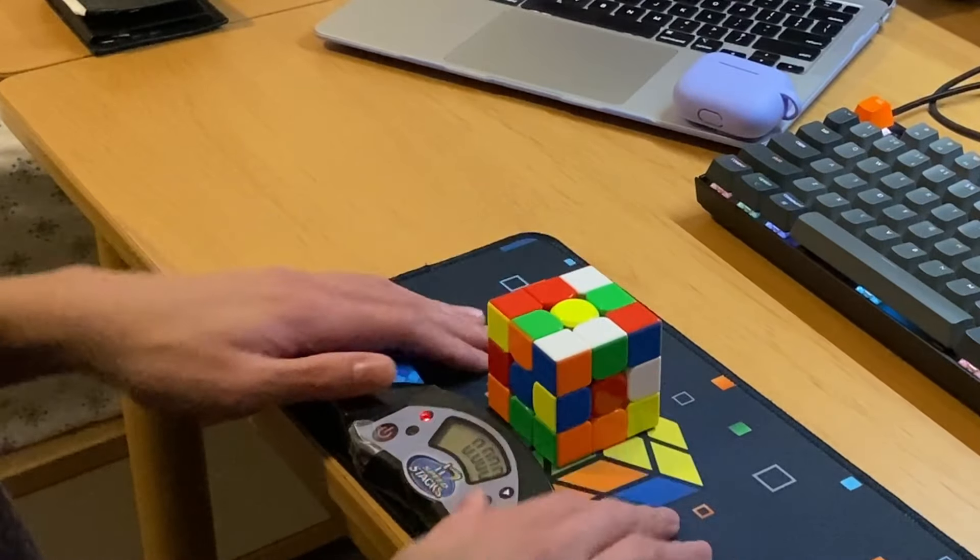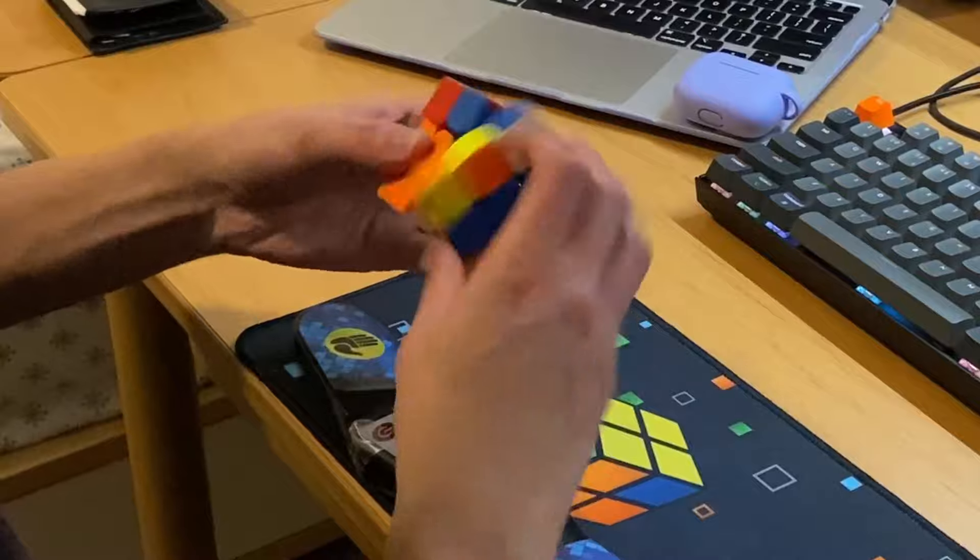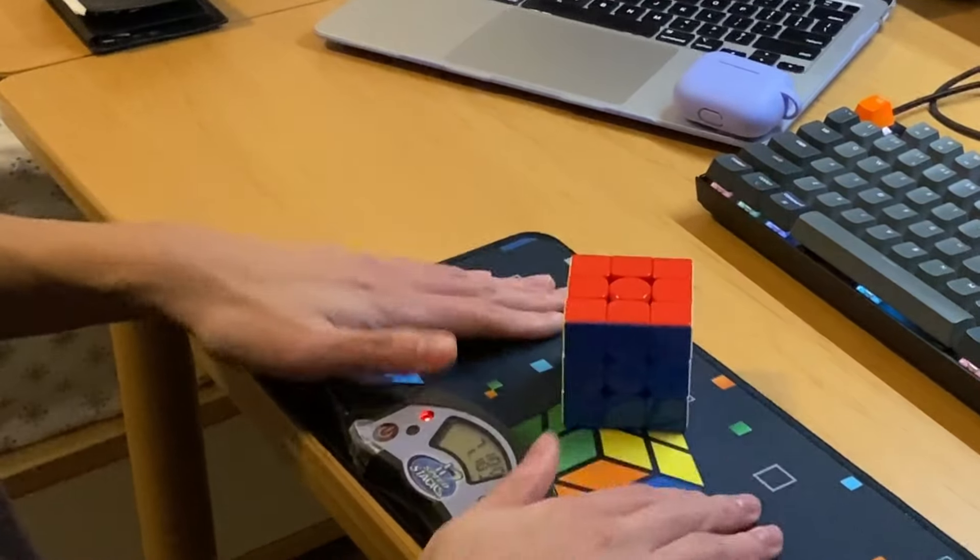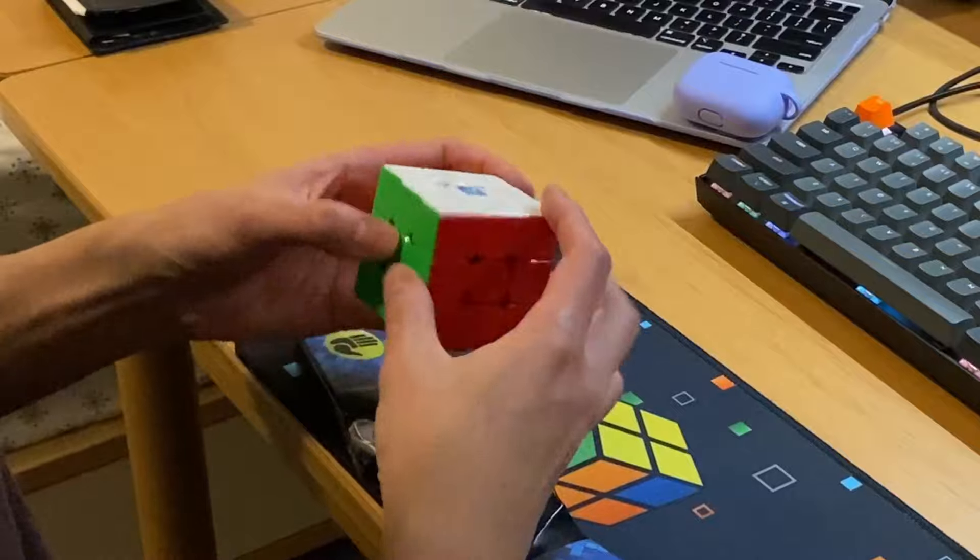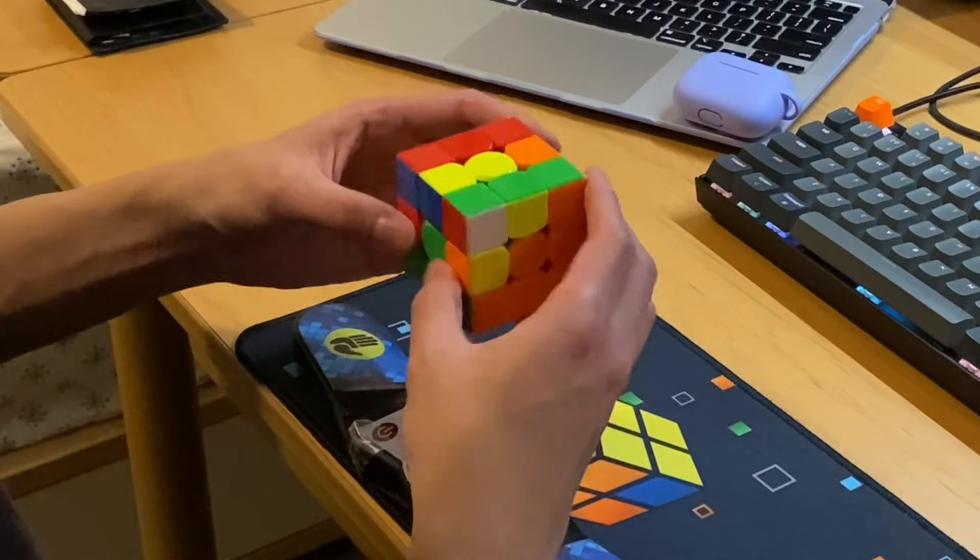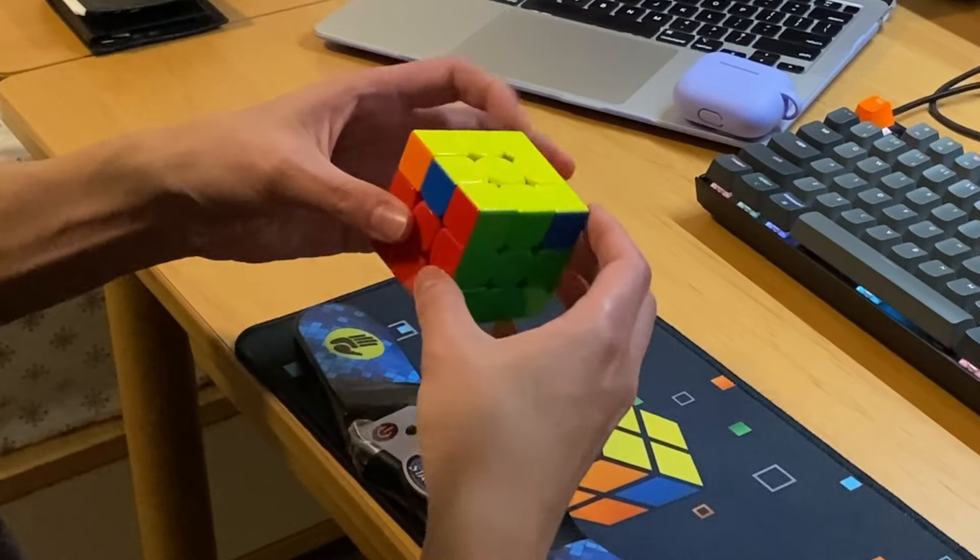Another reason I like the V5 is its good performance in competition. In comp, you tend to be more nervous and turn more aggressively, and it's good to have a more stable cube that can handle that aggressive turning. The RS3M V5 is more stable than the V9 or the Super Weilong, or other Moyu cubes, and I think that makes it work really well in competition.